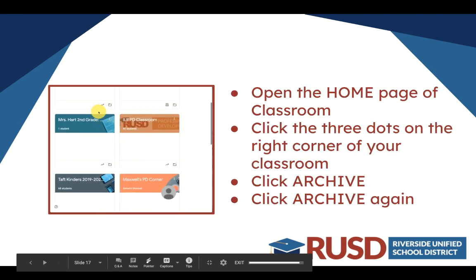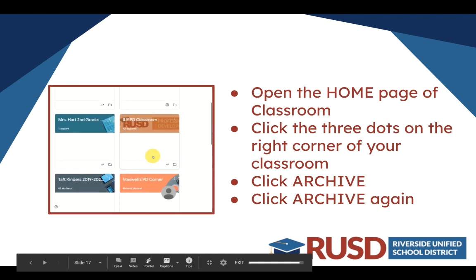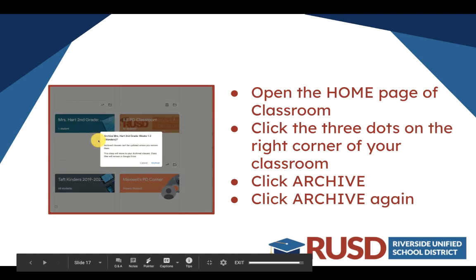Open the home of Google Classroom and again click on the three dots on the right-hand corner of your classroom. Click Archive and then click Archive once more. That class will still be available for you to reuse posts from if you want to next year, but it won't clutter up your classroom home. Hopefully you found these tips helpful and you are ready to start enjoying your summer now.